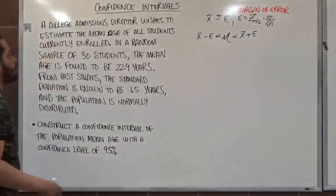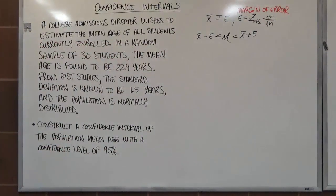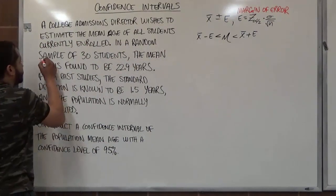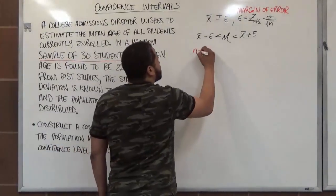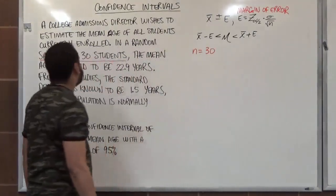And again, the x̄ is just our best point estimate for the case. So let's take a look at what they give us in the problem. Here we know the sample is of 30 college students. So we have our n, n equals 30 college students.